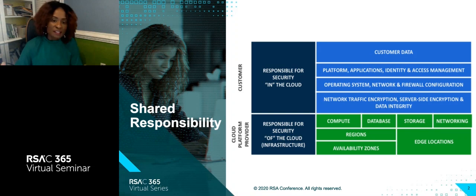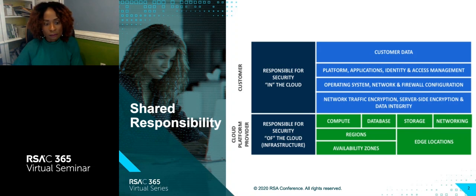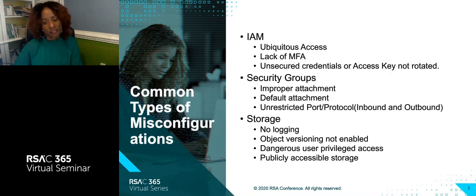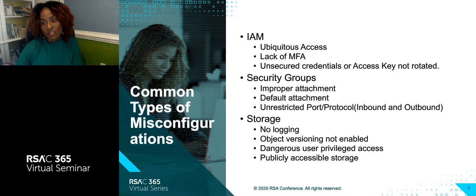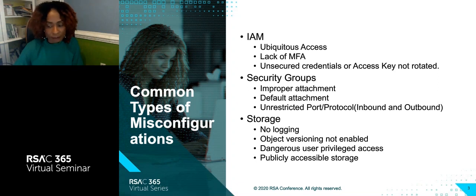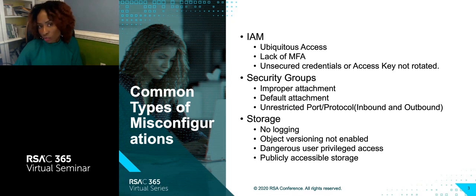Now let's talk about some common types of misconfigurations we see in cloud infrastructure. The first thing I want to talk about is IAM — Identity and Access Management. This is a tool that the cloud service provider gives to cloud consumers so they can create users and groups for their enterprises. According to research, IAM is an extremely common security weakness in cloud infrastructure.